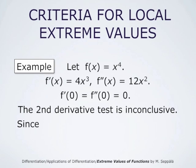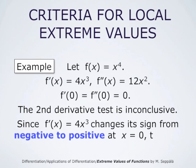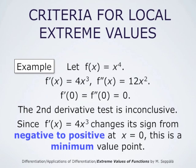The first derivative, 4x cubed, changes its sign from negative to positive at x equals 0. And this means that x equals 0 is a minimum value point for this particular function f — a fact that was immediately obvious from the definition of f in this case.